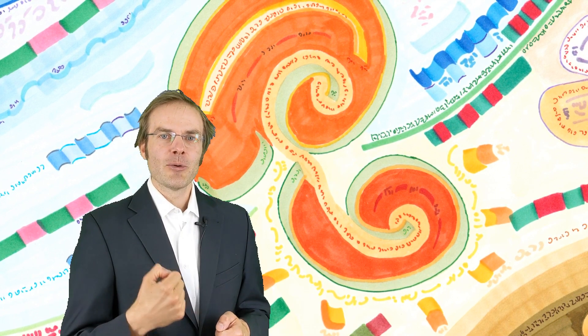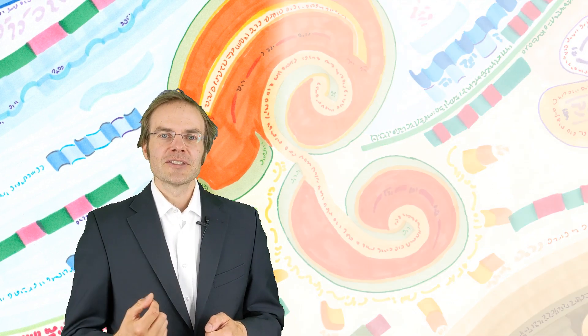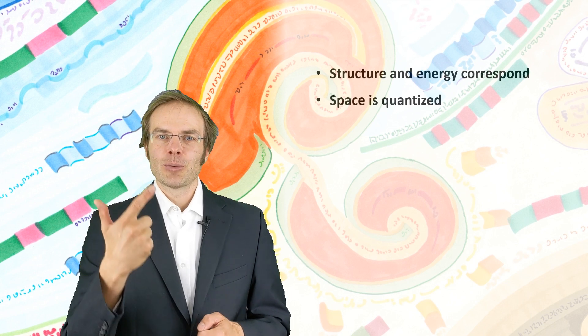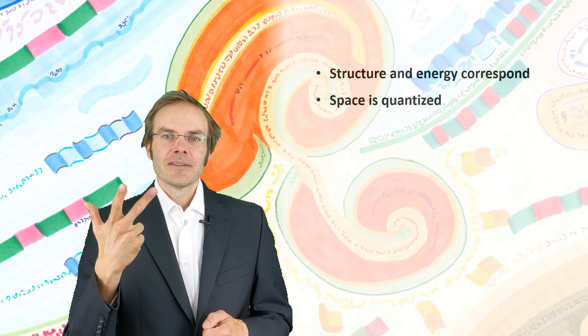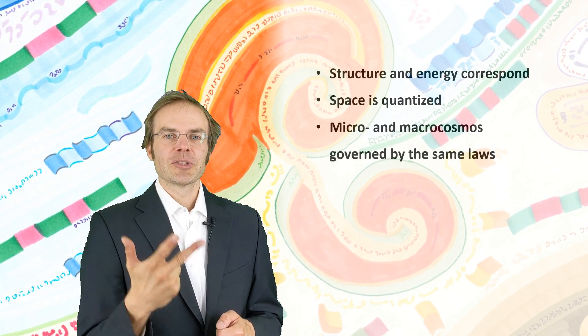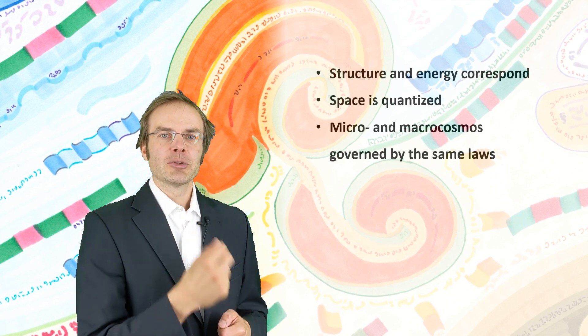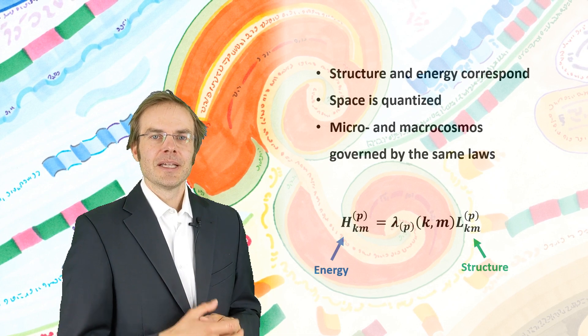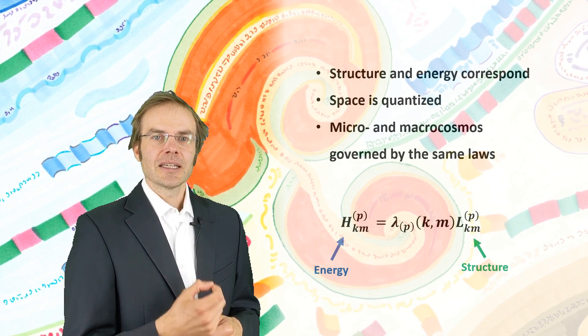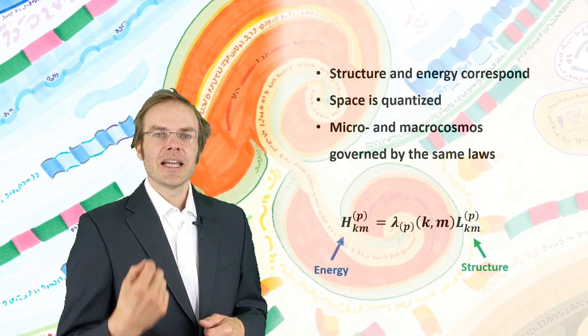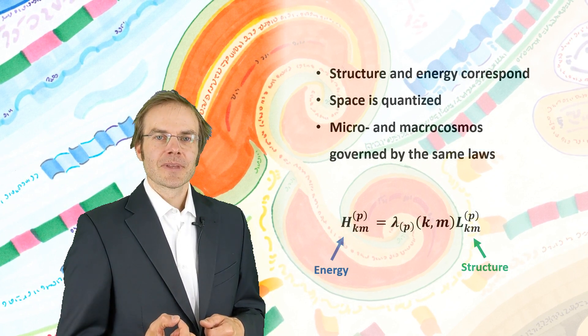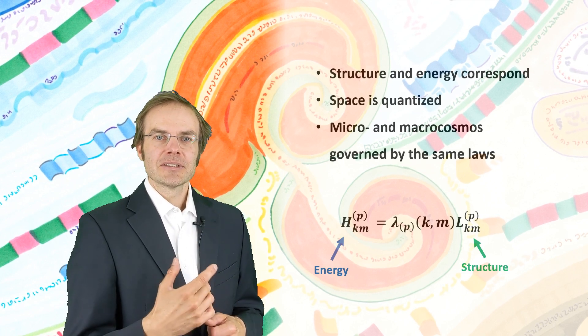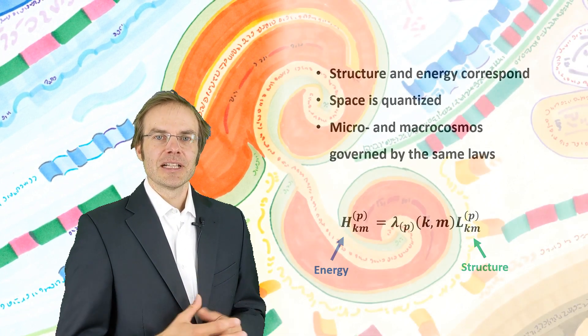Now let us remember what we have considered. We have considered that structure and energy correspond. We have considered that space itself is quantized and that microcosmos and macrocosmos correspond, and from that we have derived this equation: a equals lambda times l. It can be interpreted like the structuring of space requires energy, and structure and energy are related by these lambdas which are, as will turn out, sets of eigenvalues.